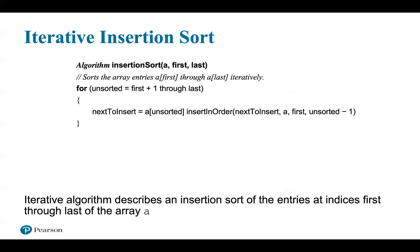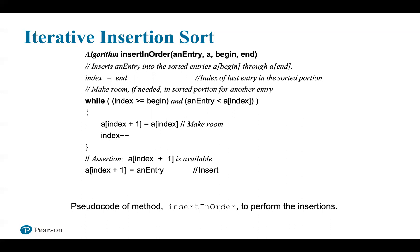The following iterative algorithm describes an insertion sort of entries at indices first through last of array a. To sort the first n entries, the call would be insertionSort(a, 0, n-1). The sorted part initially contains one entry, A[first], so the loop begins at index first+1 and processes the unsorted part. It then invokes another method, insertInOrder, to perform the insertion. The pseudocode for this method uses 'entry' as the value to be inserted and 'begin' and 'end' as array indices.